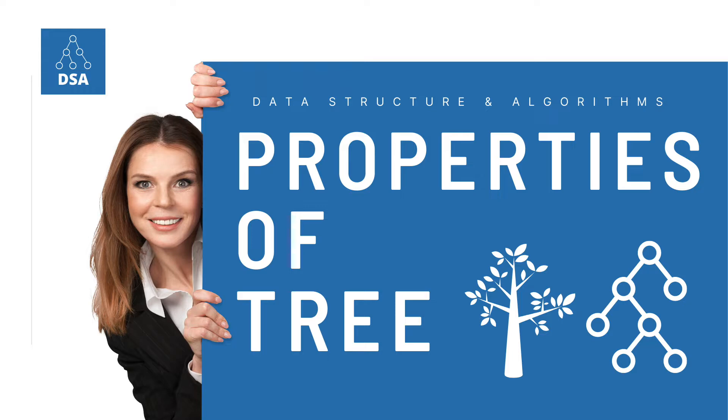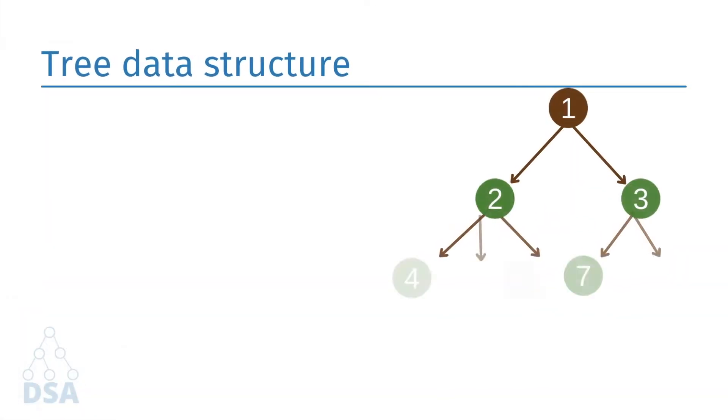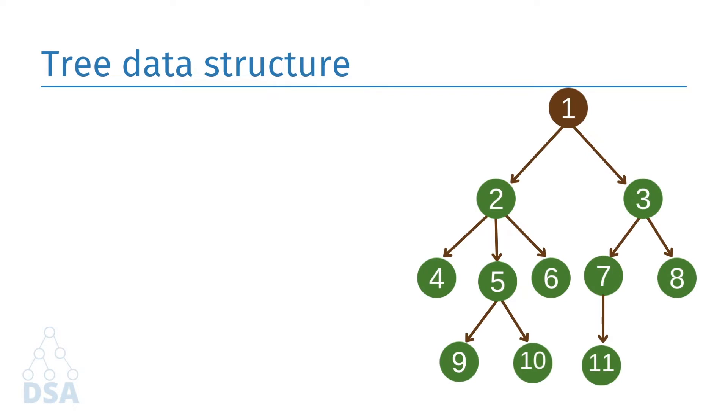Before going to the properties of tree, let's have a quick recap of the previous video. We saw that a tree data structure is a nonlinear data structure because it does not store in a sequential manner.